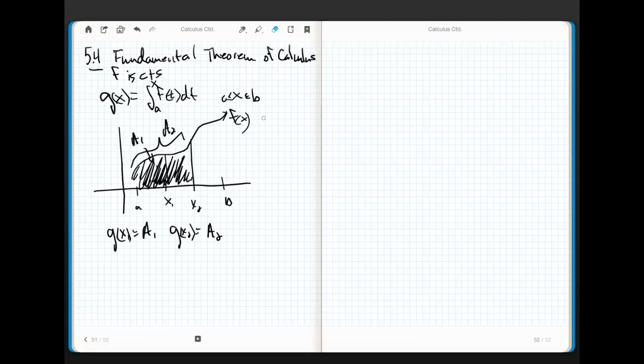I wrote f of x, didn't I? I wanted this to be f of t. The reason we don't write it as f of x—I can call it whatever I want, I can call it f of z—but what I can't have is these two variables being the same. Otherwise, it doesn't make any sense. You ready?